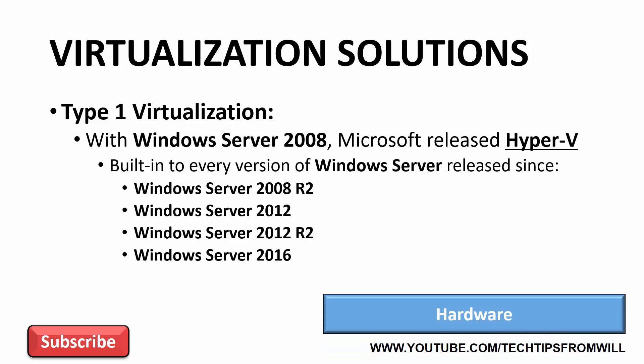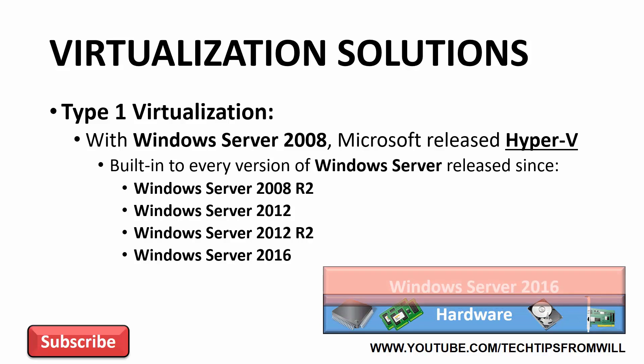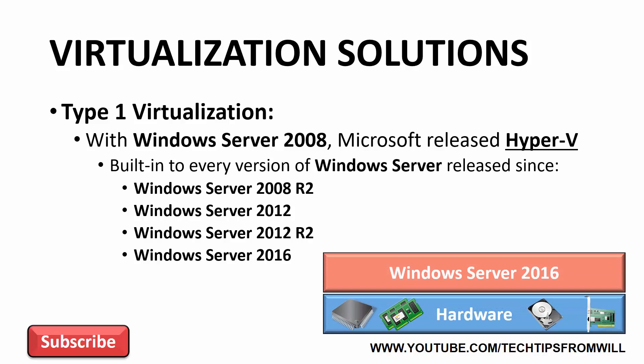Type 1 virtualization uses a newer and improved architecture than Type 2. With Type 1 virtualization, once again you have the hardware layer, which is where the physical hardware for your solution resides. Next, you would traditionally install Windows Server 2016 onto the hardware. However, when Hyper-V is installed, the architecture of the computer changes. When a Type 1 solution like Hyper-V is installed, the host operating system on top of the hardware layer is replaced with a hypervisor.